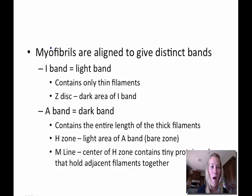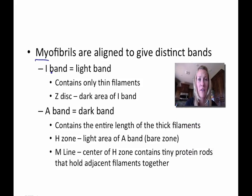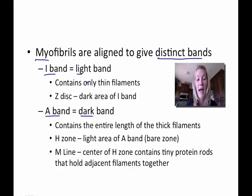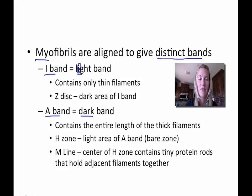Going even smaller than the myofibril — myofibrils are aligned to give distinct bands. You have two different bands: the I-band, known as the light band, and the A-band, which is the dark band. Here's a hint: the second letter in 'light' is I, so light is the I-band; the second letter in 'dark' is A, so it's the A-band.